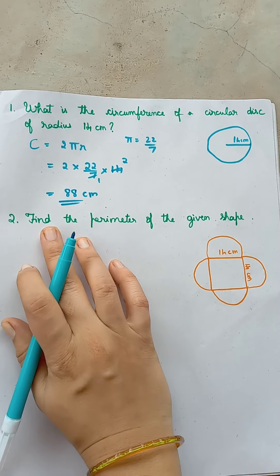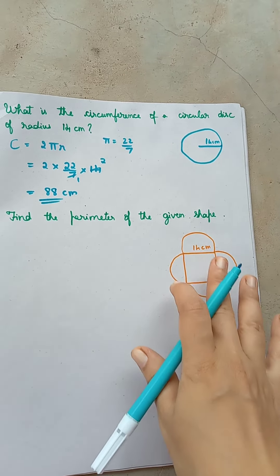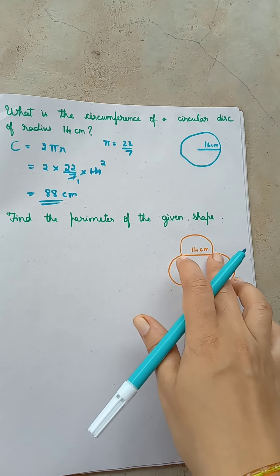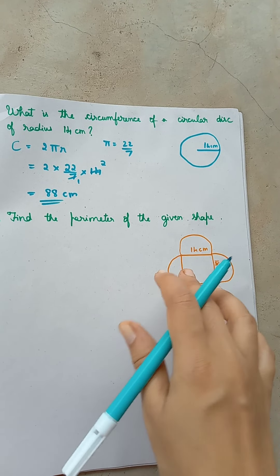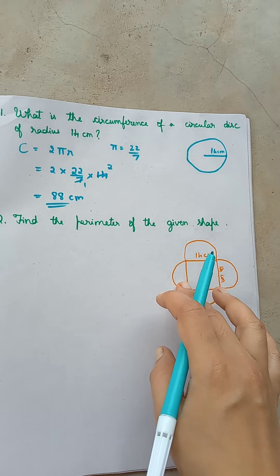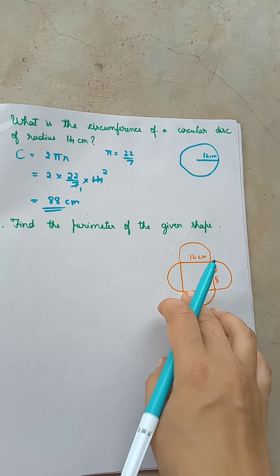Next problem, find the perimeter of the given shape. So you have here one shape which has 4 semicircles. So the circumference or perimeter of this whole figure will be the sum of circumference of these 4 semicircles.